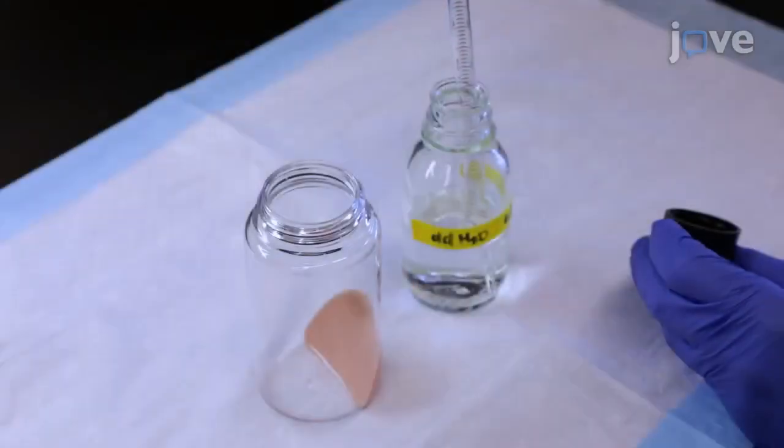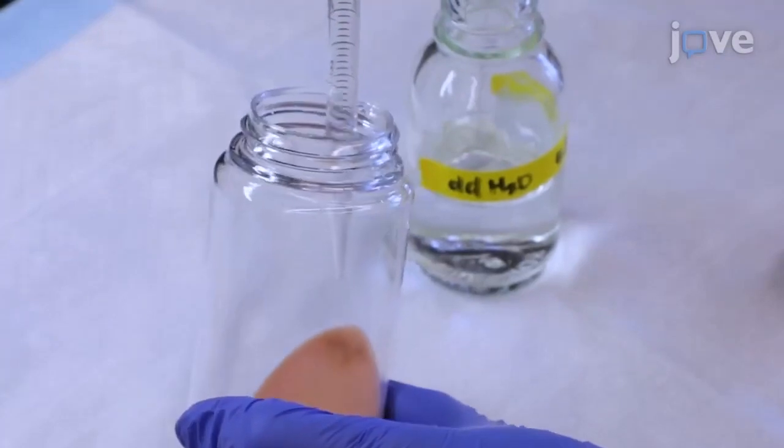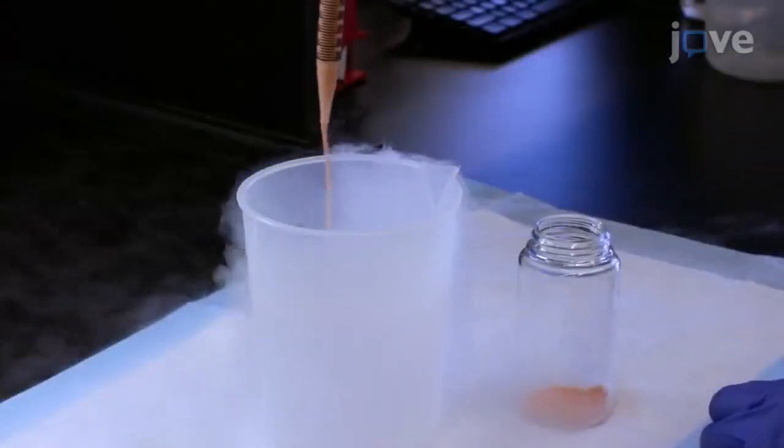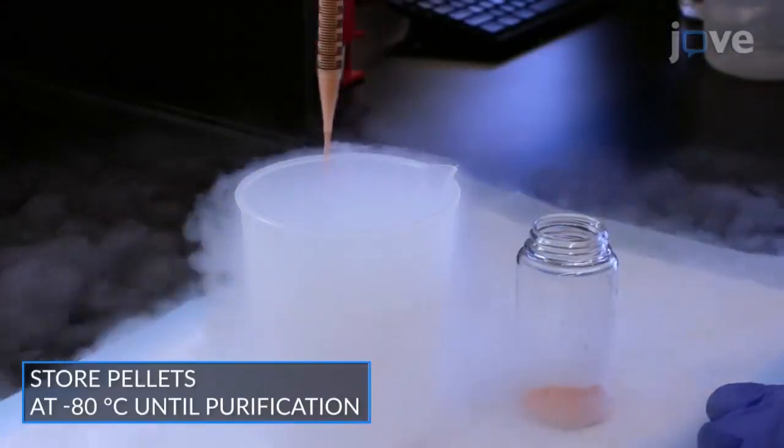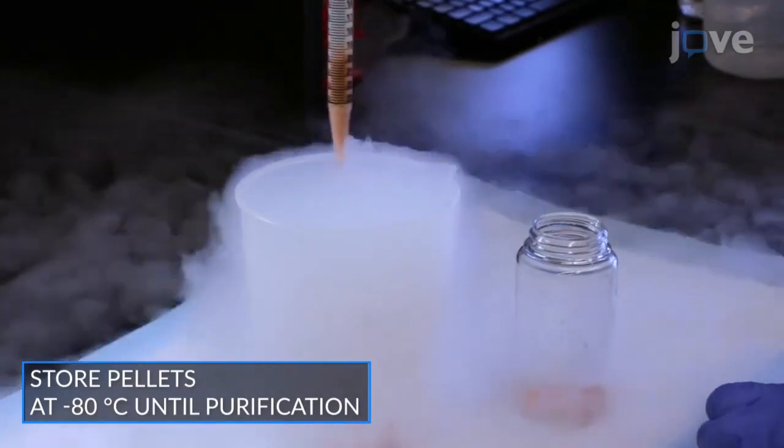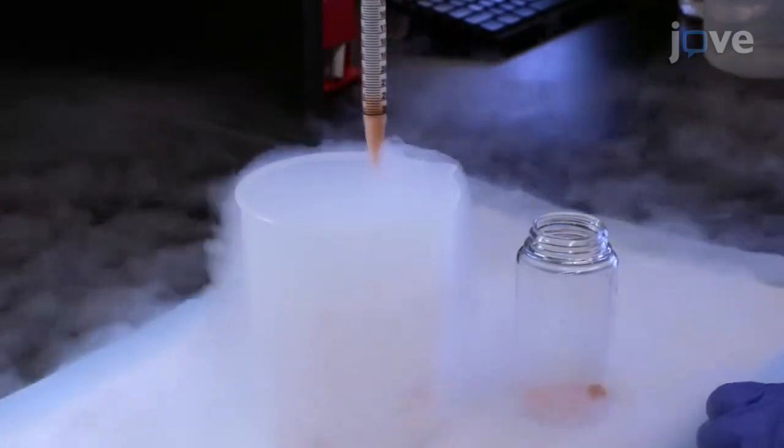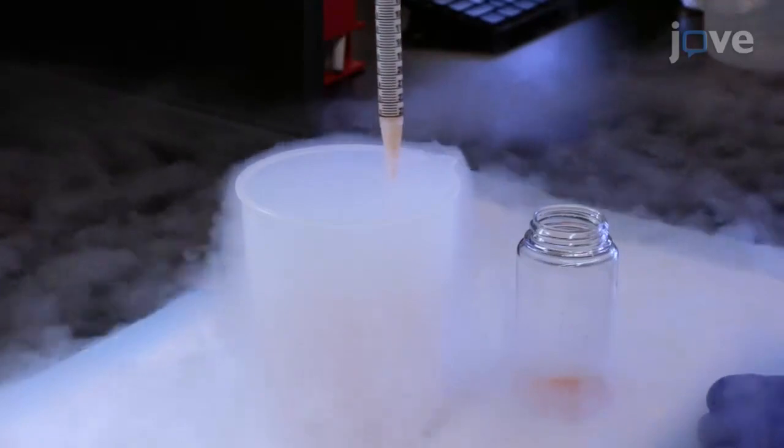Spin the cells again for collection and resuspend the pellet in about 2 milliliters of double distilled water. Then use a 10 milliliter pipette to slowly dispense the cell slurry into liquid nitrogen, one drop at a time, to produce frozen yeast cell pellets.